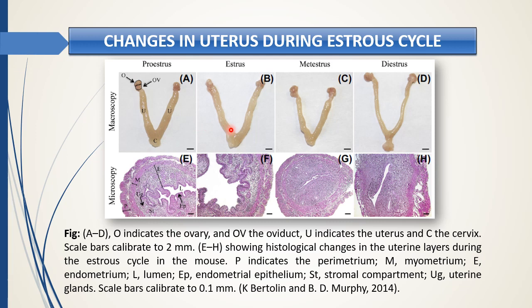In estrus, more development is observed in the uterus. If ovulation occurs, a bed is prepared inside the uterus, and if fertilization occurs, the fertilized egg will be implanted there. During metestrus, the structure decreases, followed by diestrus, where the uterus comes to a very dormant state. If the cycle is normal with no pregnancy, the dormant uterus will develop in the next cycle, like in proestrus.